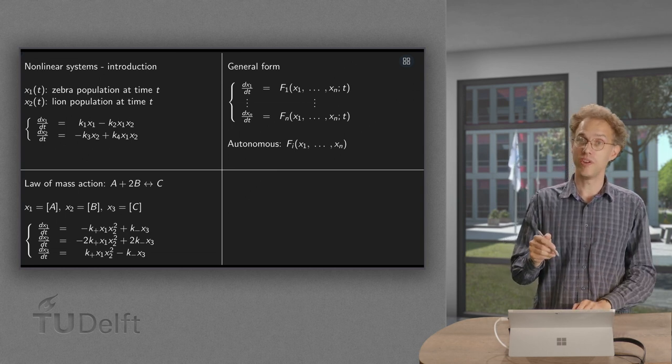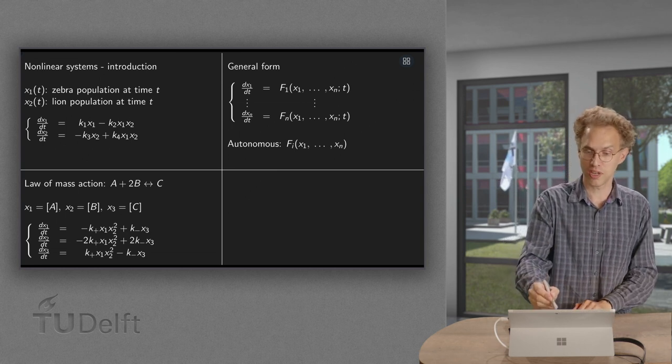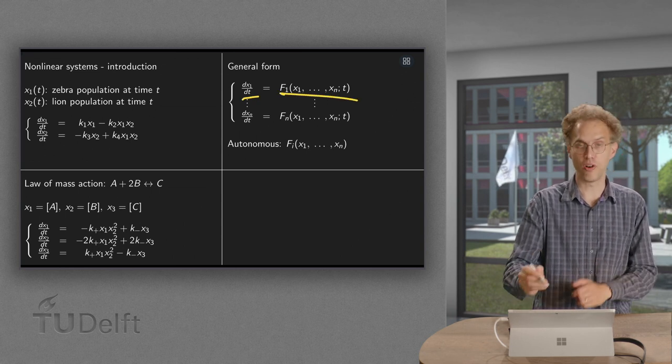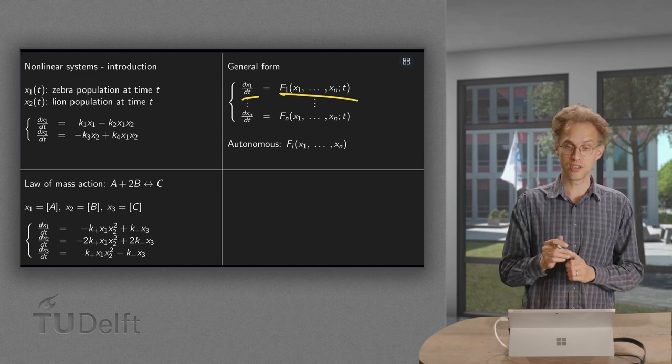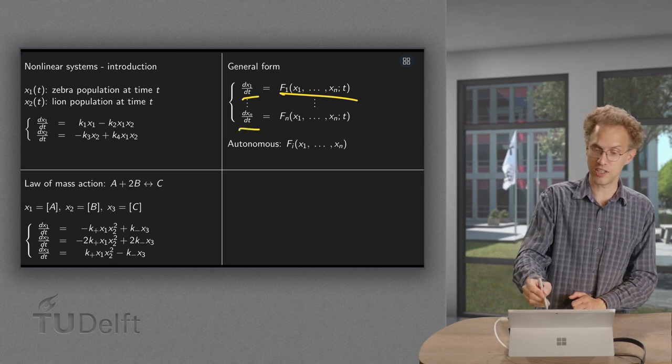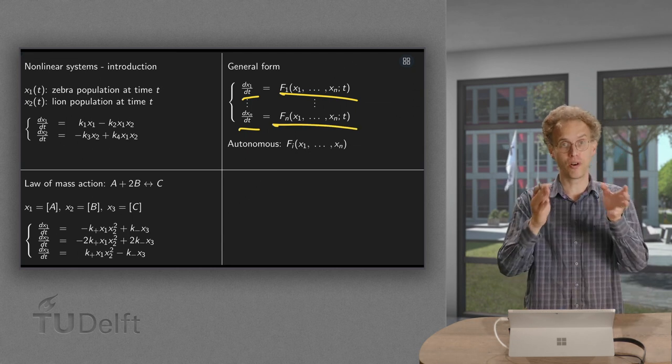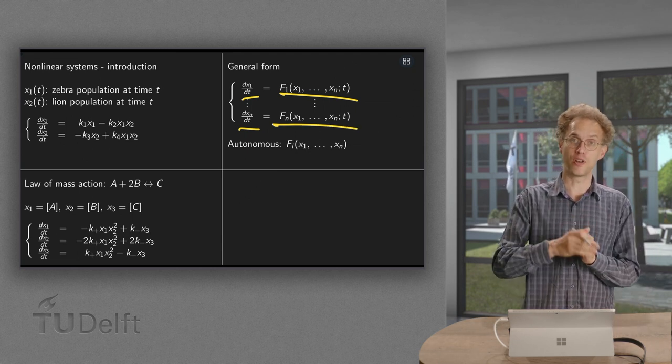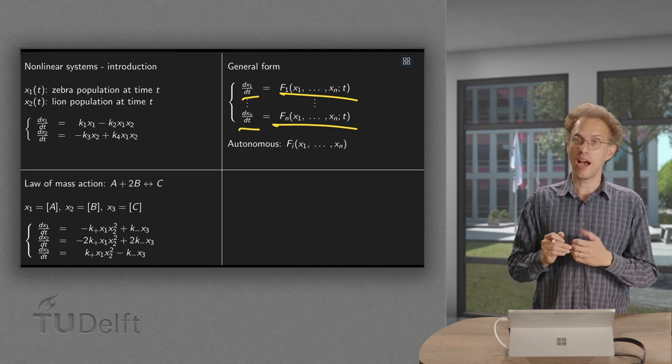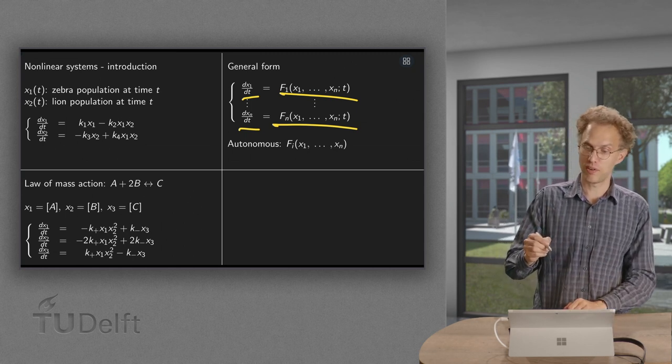So in general, we will write our system as follows: dx1/dt is some nonlinear function of x1 up to xn and time t. And for the last variable as well: dxn/dt is also some other function of your dependent variables x1 up to xn and time t. And now an important class which we will look at.